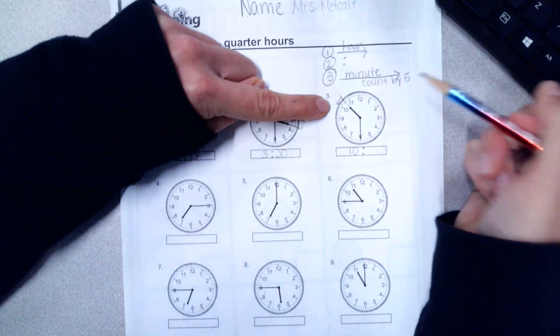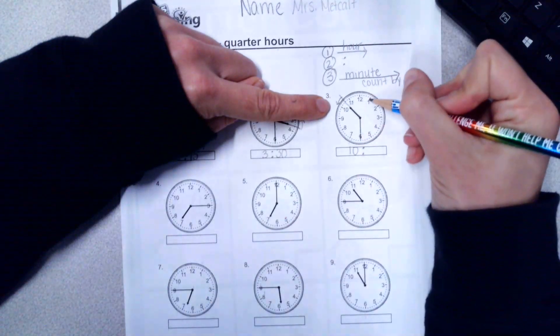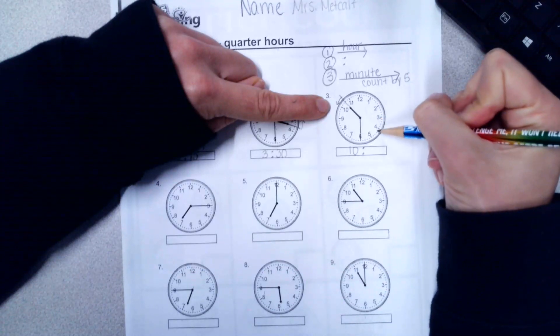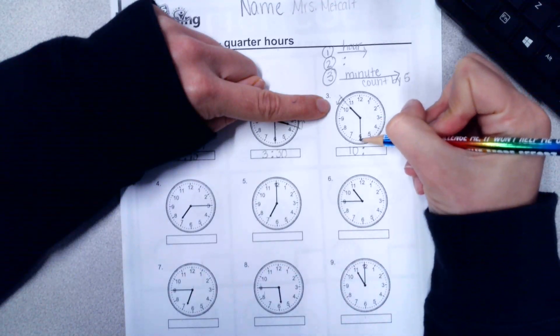And now it's the minute hand. So I count by five: five, ten, fifteen, twenty, twenty-five, thirty.